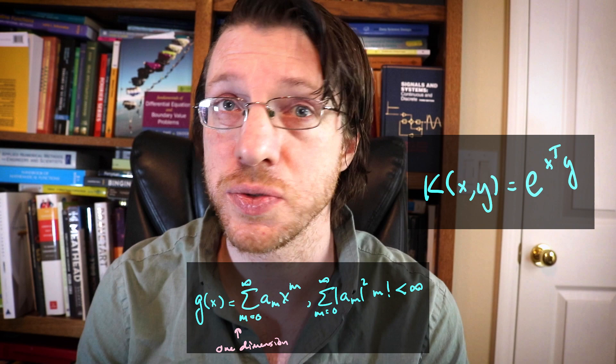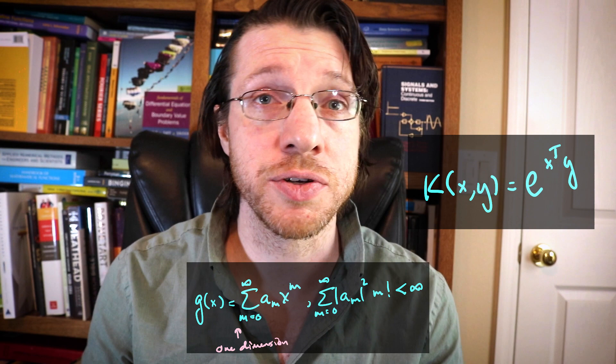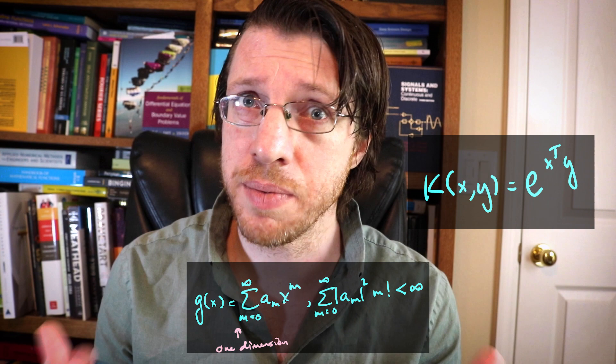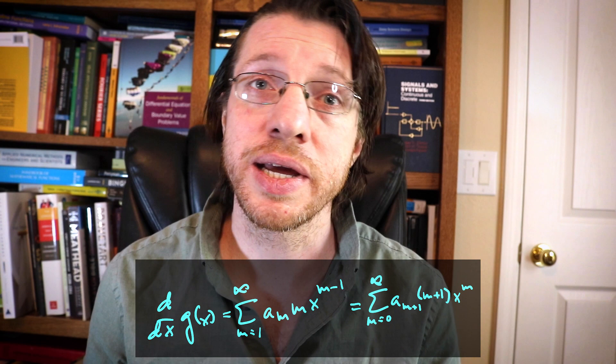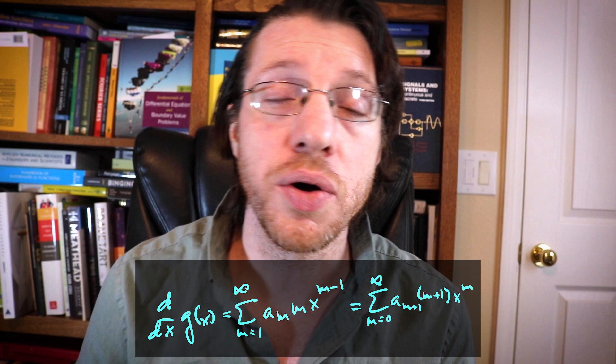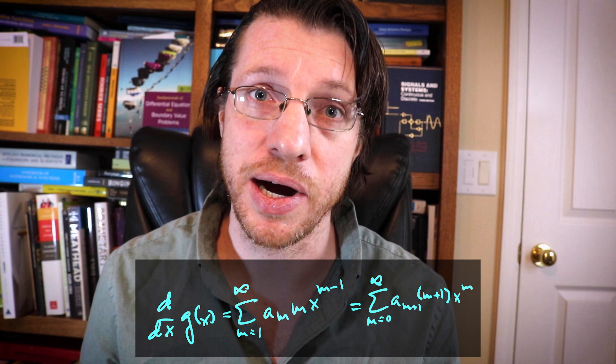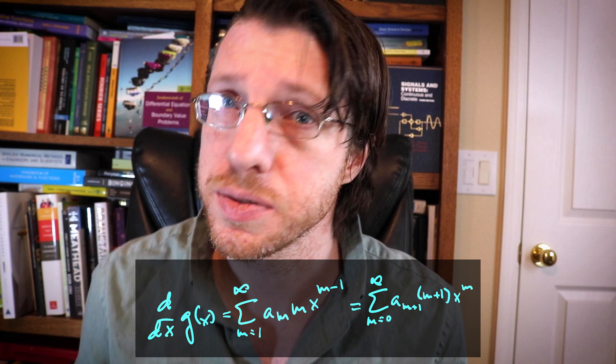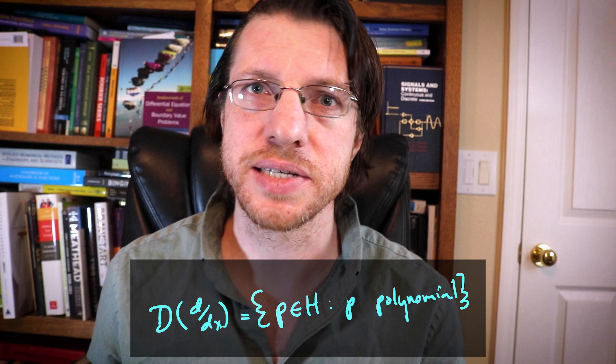This is also called the Fock space when considered over complex numbers. An example of a densely defined operator over this Hilbert space is differentiation. If we take a power series from our vector space and take its derivative, the derivative of a power series is another power series — but increasing the coefficients means it won't always land back in our space. However, if we start with a polynomial — a finite power series — its derivative is another polynomial. Polynomials are dense inside the exponential dot product kernel's native space, the Fock space, so we have a dense domain where differentiation actually works. Thus differentiation is a densely defined operator over the Fock space.